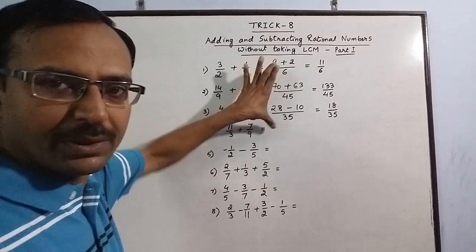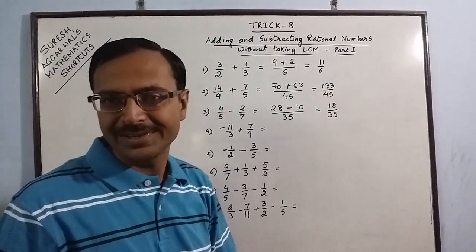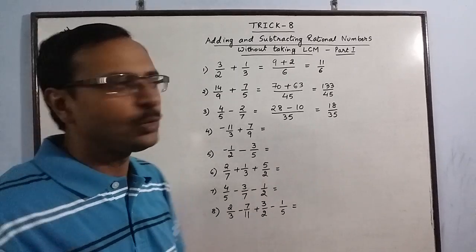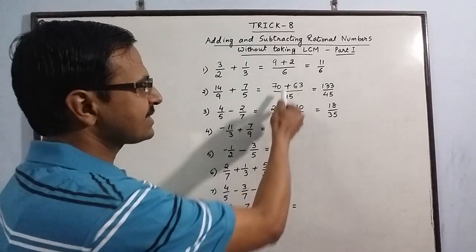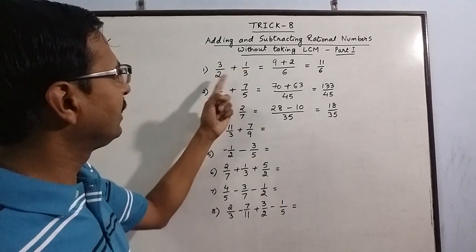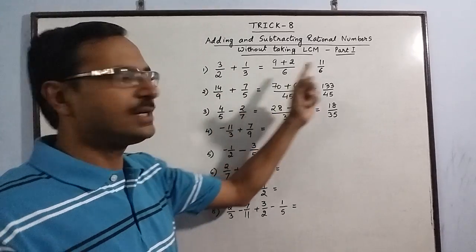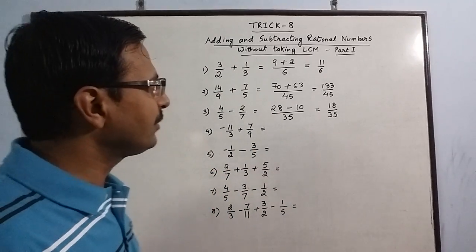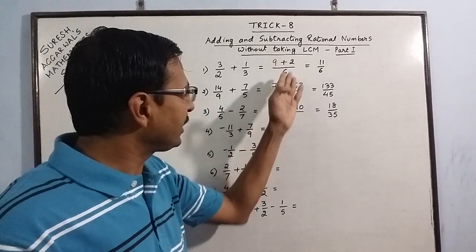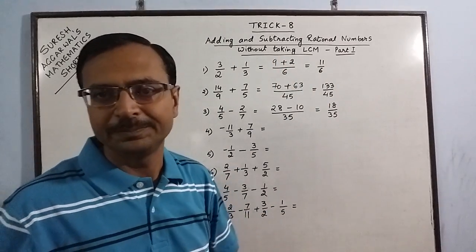I am writing this intermediate step just for the convenience of my students. Otherwise, when you are doing this mentally, you don't need to write this step. You can just do: 9 plus 2 is 11, 2 times 3 is 6, so in mental maths you can let go of all these steps and arrive at the result directly.